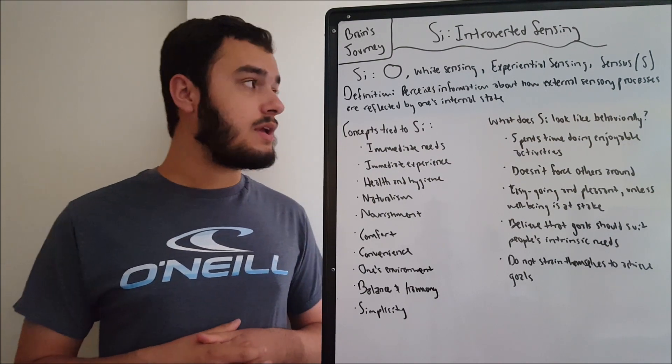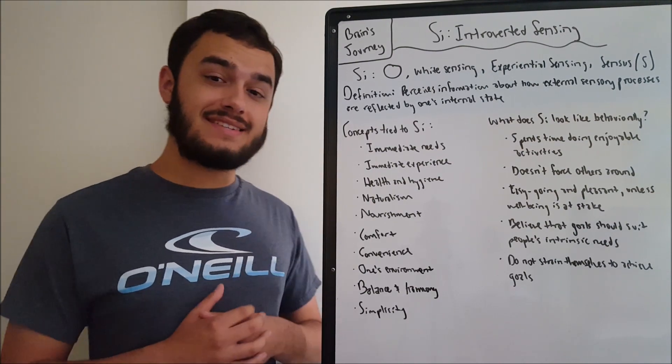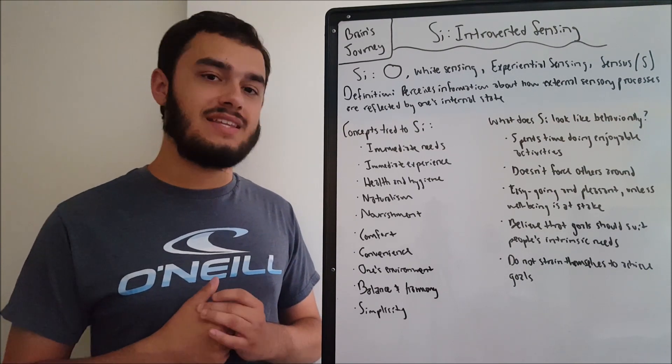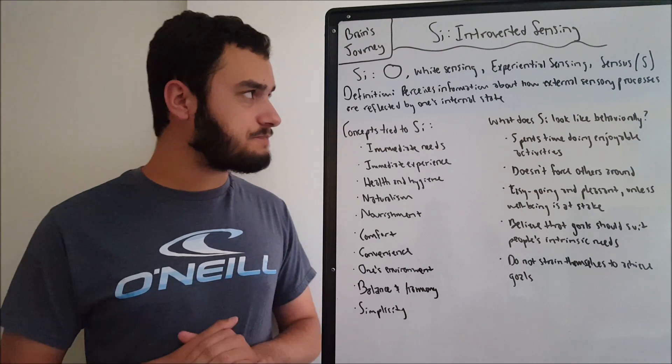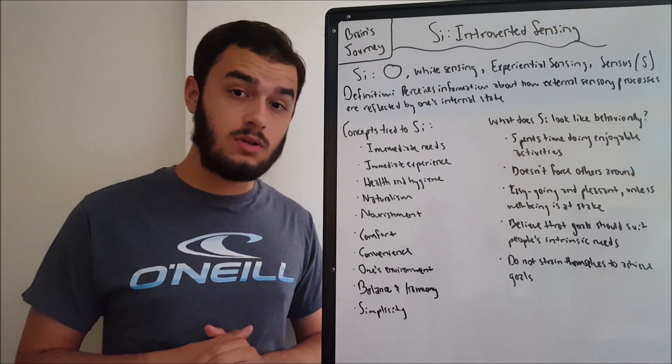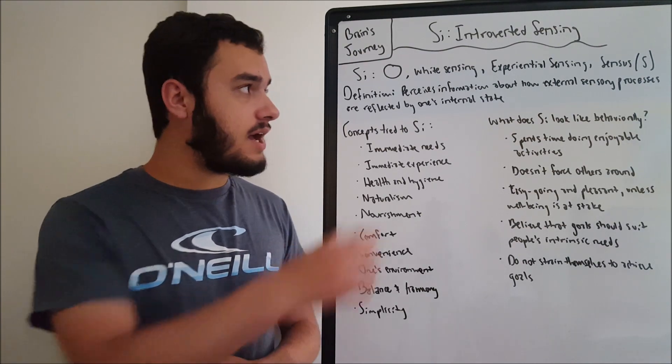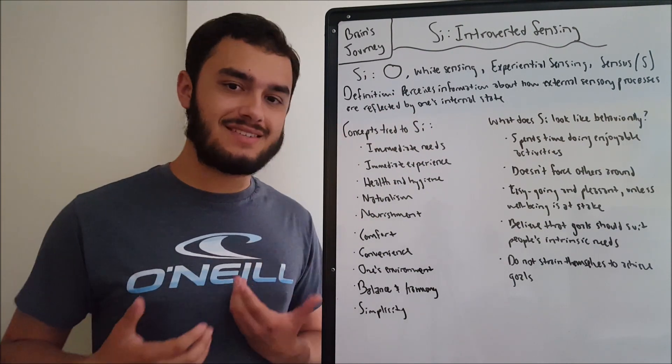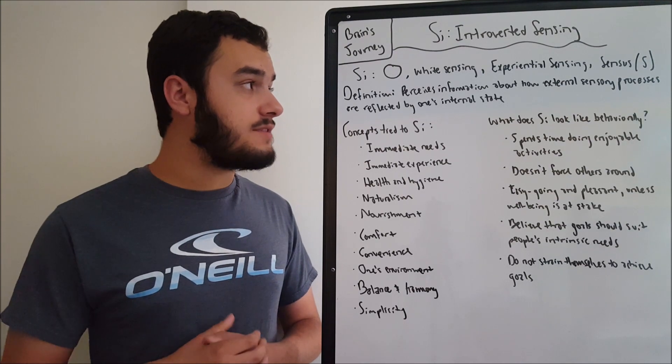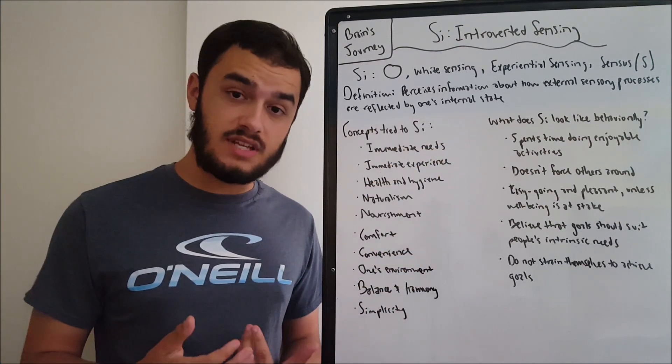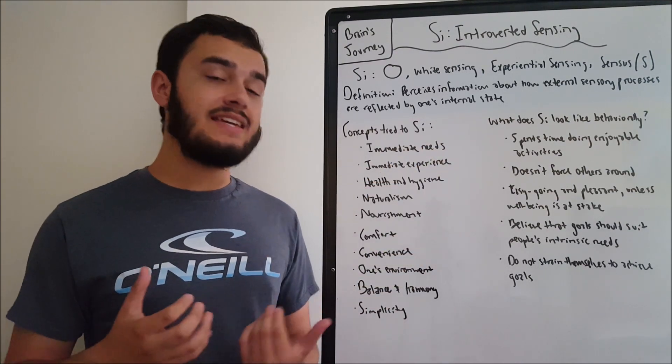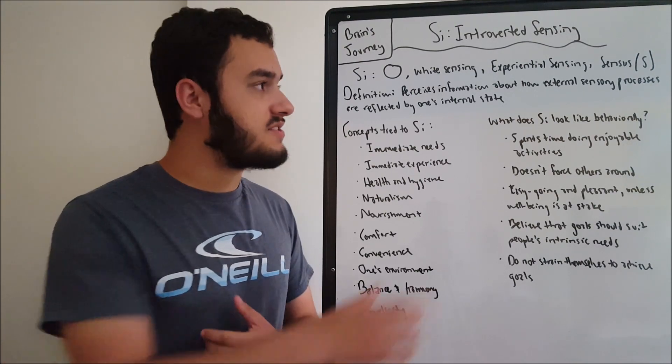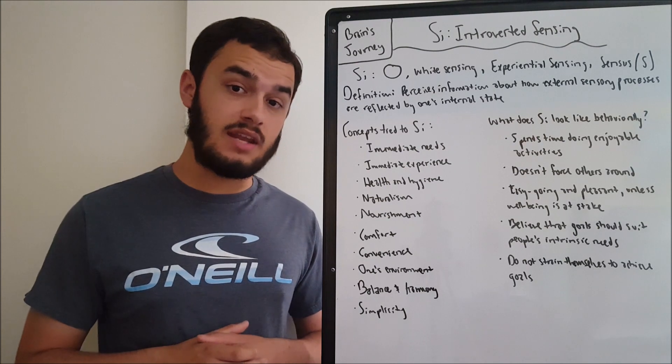So let's get into some alternative names. Things that you may see SI called that are not necessarily orthodox or related to the MBTI description. You might see this white circle, and correspondingly, white sensing. You remember in the last one we had the black circle, black sensing, well this is different. We have this one as experiential sensing, in contrast to SE, which was volitional sensing. And then the Latin word sensus, which you will see abbreviated to S.